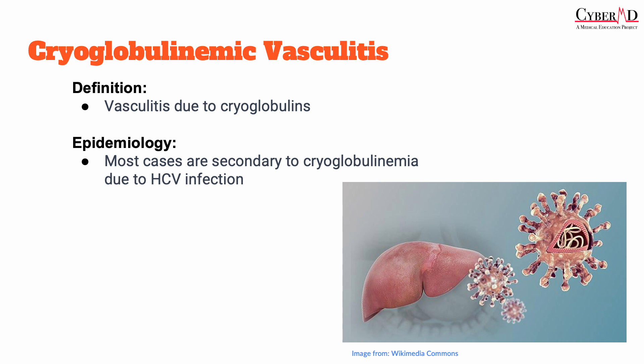Moving on to cryoglobulinemic vasculitis. This is a systemic vasculitis characterized by the presence of cryoglobulins in the blood vessels. Cryoglobulins are abnormal proteins that precipitate at low temperatures, which can cause occlusion of small and medium-sized vessels. This type of vasculitis is rare but more common in middle-aged and elderly individuals, and the vast majority of cases are occurring in the setting of a hepatitis C virus infection — which is very high yield for your exam.